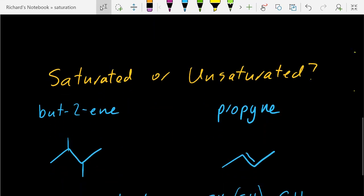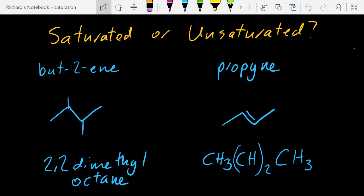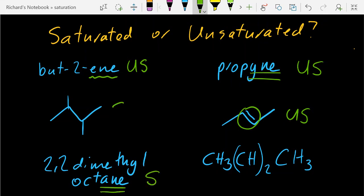Have a crack at these: saturated or unsaturated? Well, alkenes are unsaturated. Alkynes are unsaturated. And this is a skeletal structure of an alkane.